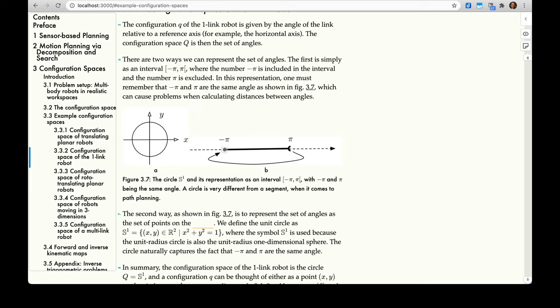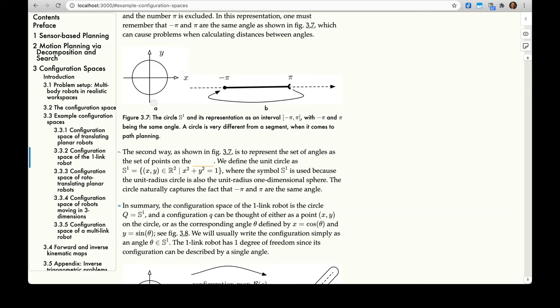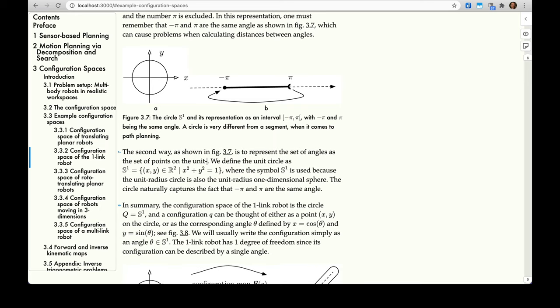So if you see here when we have an angle, it's going to wrap back around on itself. If you go from negative pi, you keep increasing the angle until you reach pi, you're actually back now at negative pi. You can also think of it on the unit circle like this, as we will in just a moment. The second way, as shown in figure 3.7A, is to represent the set of angles as the set of points on the unit radius circle. The unit radius circle can be shown in the plane xy like this.